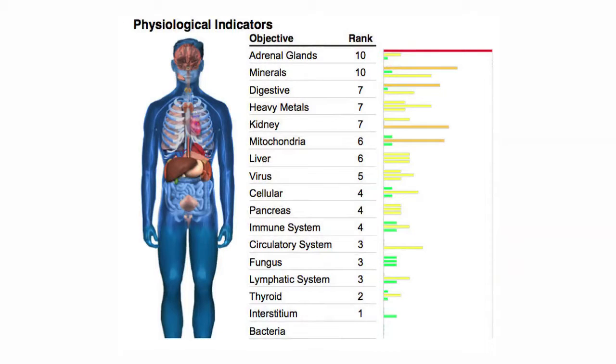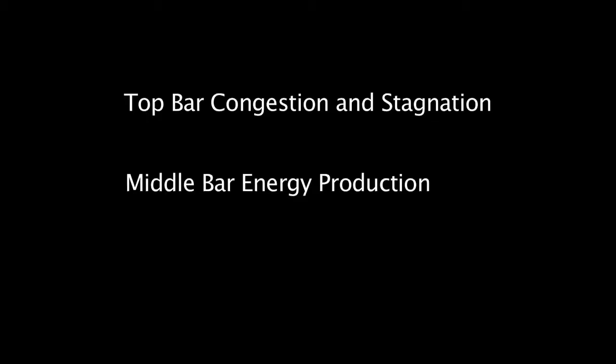Now on the second page with the blue torso we get even more specific information. You have a number of objectives or physiological indicators ranked on a scale of 1 to 20, with 1 being the best and 20 being the worst. Next to that are three colored bars that tell us where in that system the stresses are originating: the top bar elevated indicates major stress coming from sheer overwhelm — we call it congestion and stagnation; the middle bar elevated indicates a serious compromise in energy production in that system; and the third colored bar tells us that the compromises within that particular system are originating with digestion.